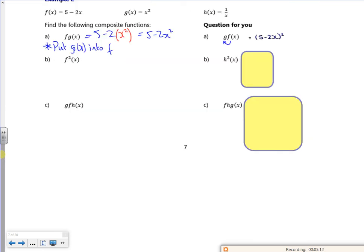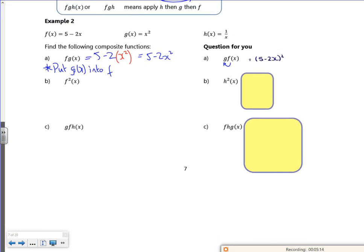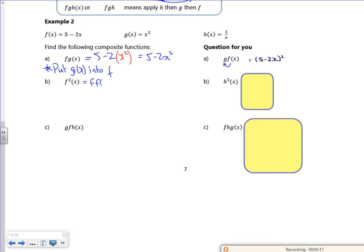Let's have a look at this then. So f squared is actually f of f. So I'm going to put f into f. So I've got 5 minus 2, I replace the x with 5 minus 2x. So I'm putting the f of x into it. So what's that going to give me? 5 minus 10 is minus 5, plus 4x. So 4x minus 5 is better, for f of f of x.